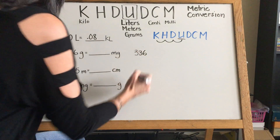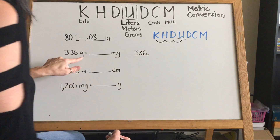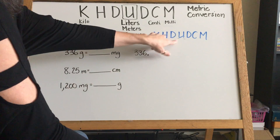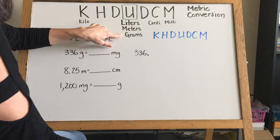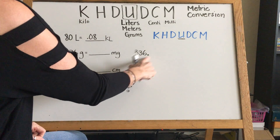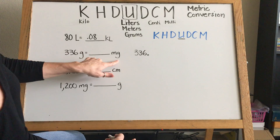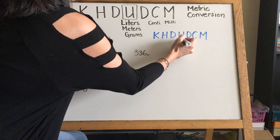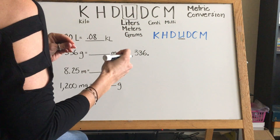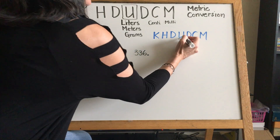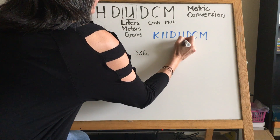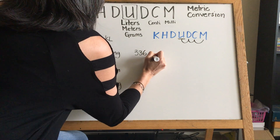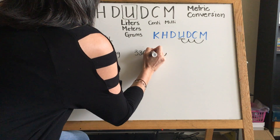Our next one is 336. Our decimal again is at the end. This time we're starting at grams — which is the U, our basic unit of measure. They want us to convert to milligrams. Milligrams is all the way down on the chart, so if we're going from grams to milli, we're going to be multiplying. We're going to the right this time, so we move our decimal three places: one, two, three.